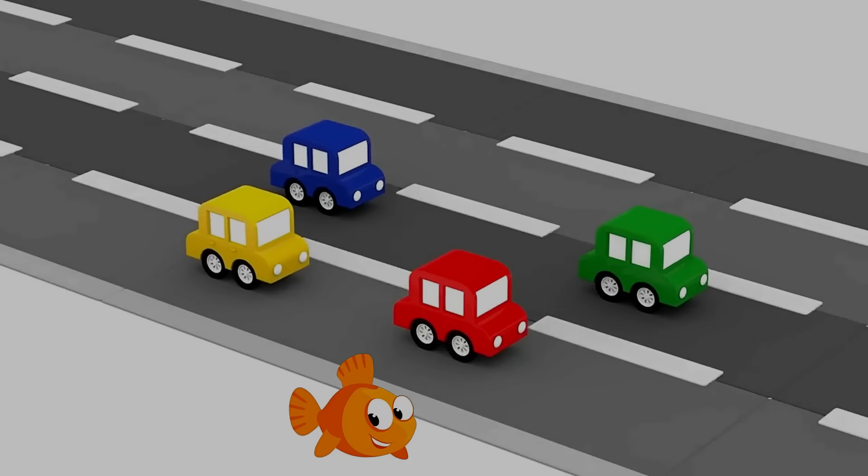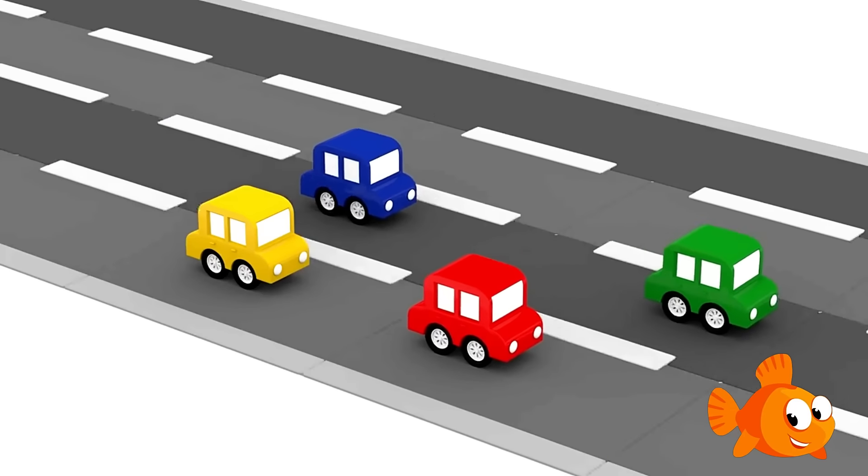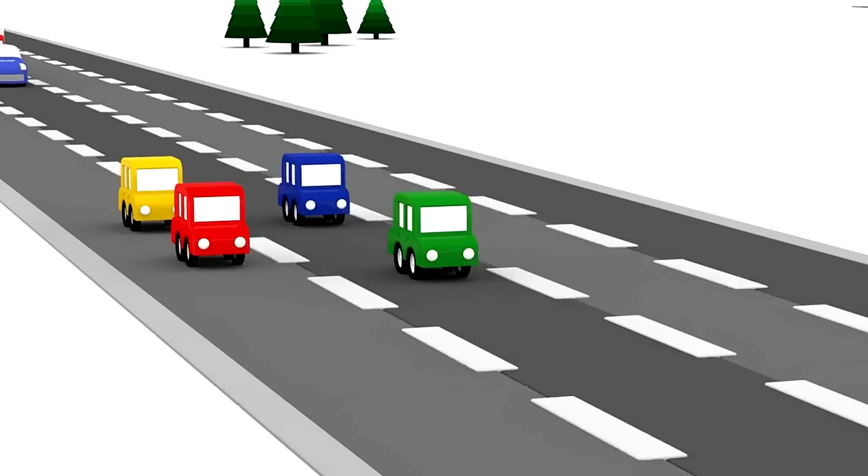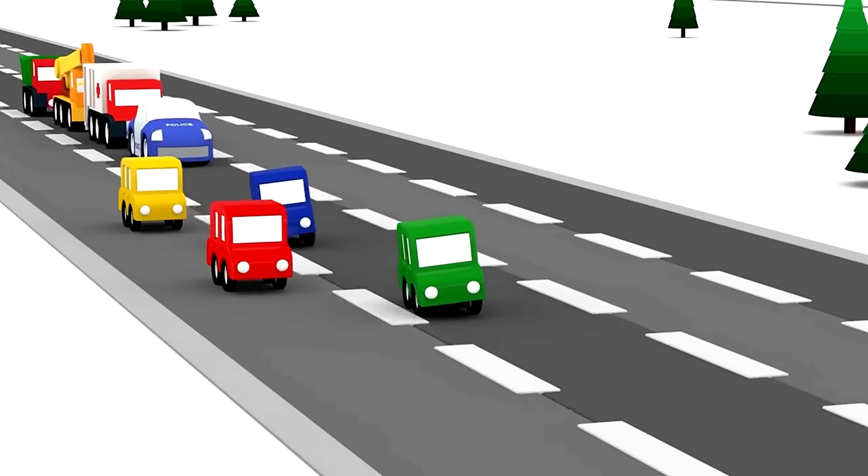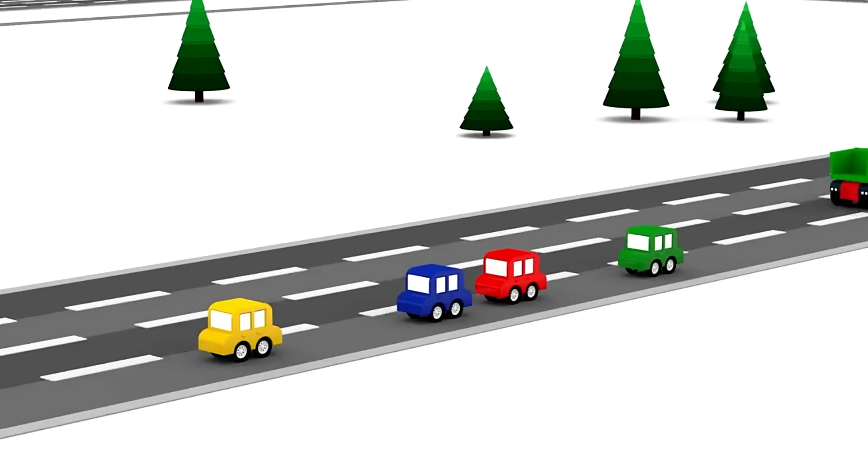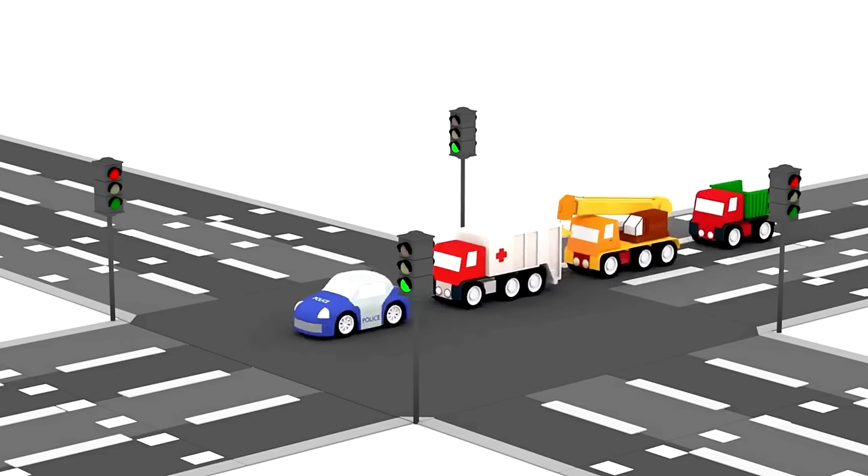The four cartoon cars are happy driving along the road. The cars always let police cars and ambulances overtake them because the cars understand traffic rules. All cars must give way to emergency vehicles.